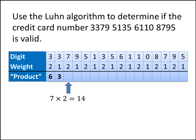Now something interesting happens. Seven times two is fourteen, and fourteen is a two-digit number. So the Luhn algorithm tells us to take those two digits and add them together. We get five, and five is what we put in for the quote-unquote product. So certainly I'm not saying that seven times two is five, but for the Luhn algorithm, five is the result that we write down.